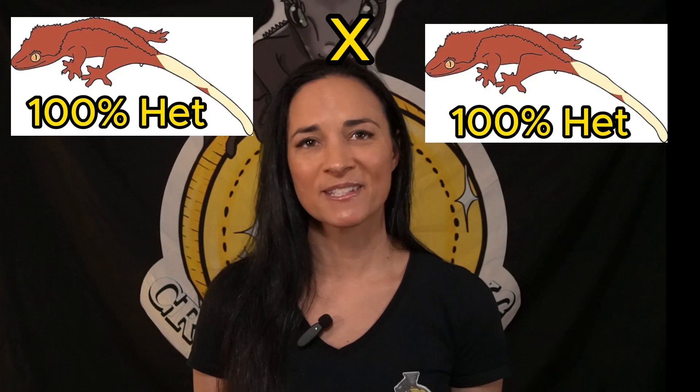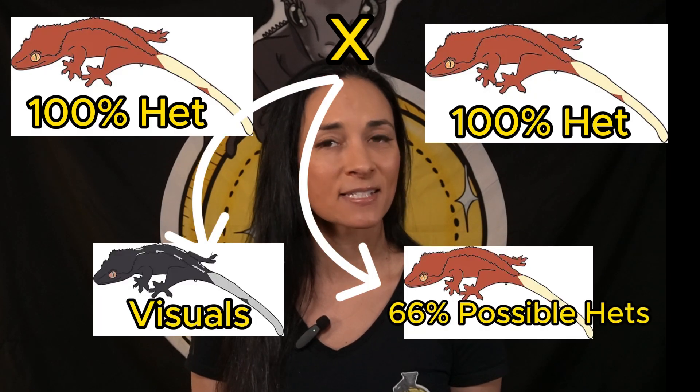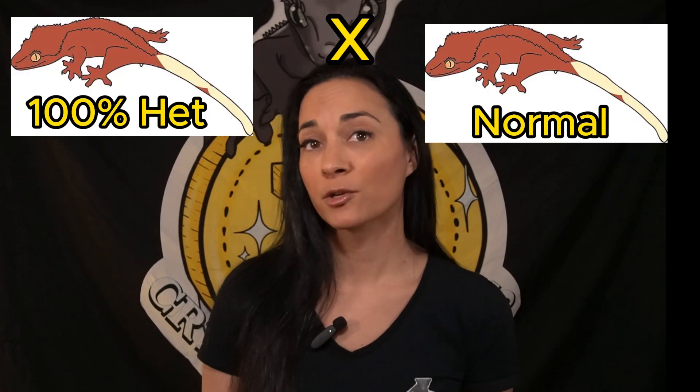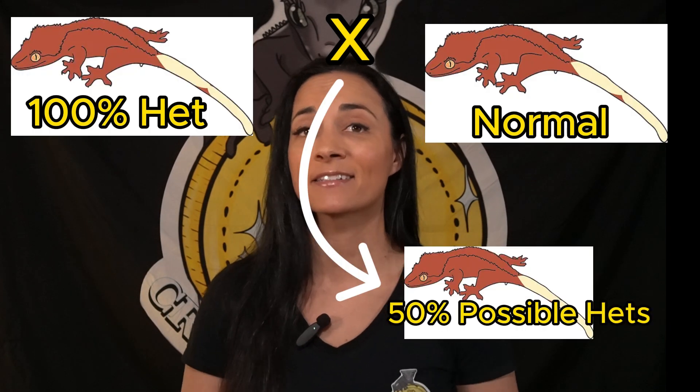So just to sum it up: if you pair two 100% hets, they will produce visuals and 66% possible het. A 100% het paired with a normal will produce 50% possible het only — no visuals. So based on all that we just went over, 50% and 66% are just your odds. But in the end, it doesn't really mean a whole lot. A gecko either is or isn't het for xanthic. It does make people feel better, however, when buying a gecko that they are hoping is 100% het — to say that it's a 66% het, they feel like they have better odds. It's just like when you enter a raffle with low entries. The odds are in your favor, but there are no guarantees unless you have a proven 100% het. But hey, some people are willing to gamble, and I totally get that, and there's nothing wrong with that.